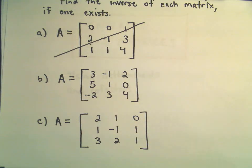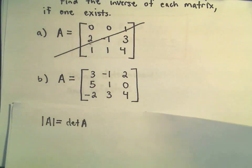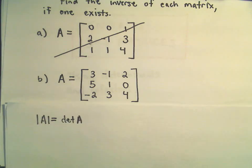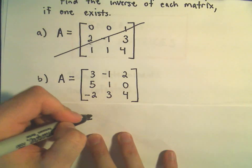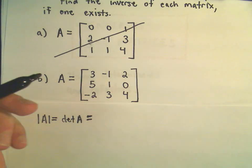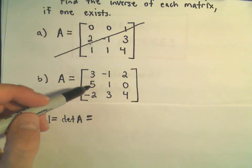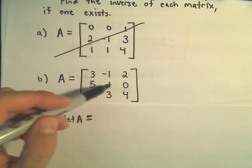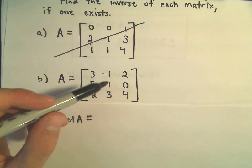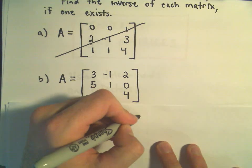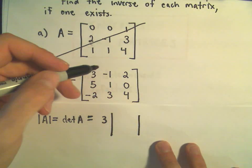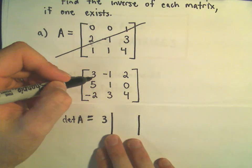The first thing we're going to do is find the determinant of this matrix. The way I do it is I always expand along the first row. It would actually be easier to expand along the second row because there's a zero in there, but let's proceed.